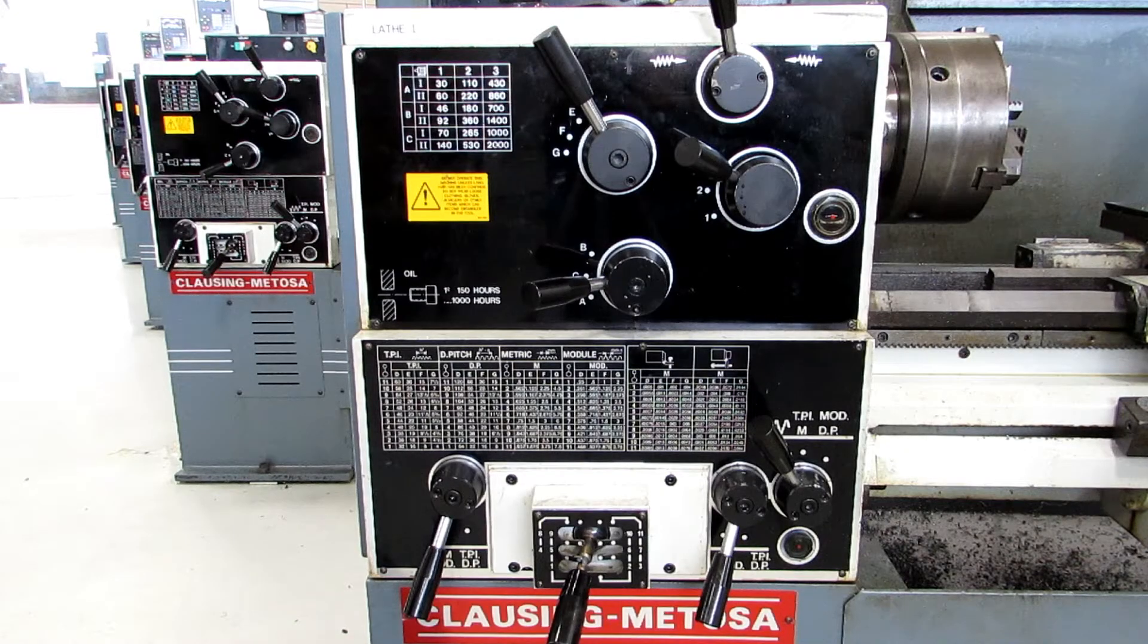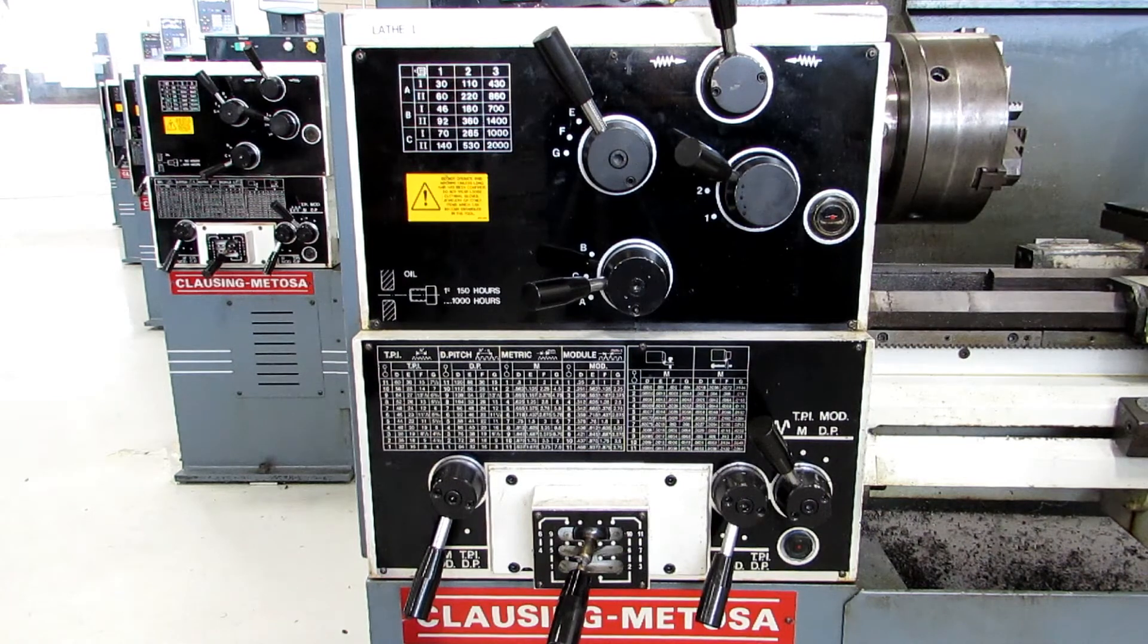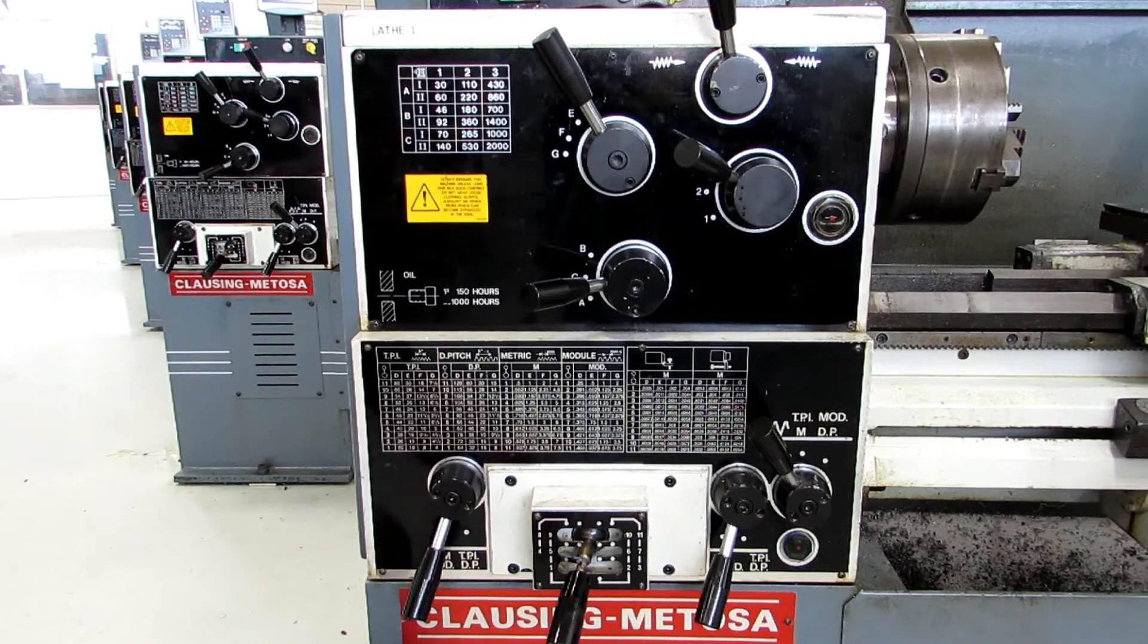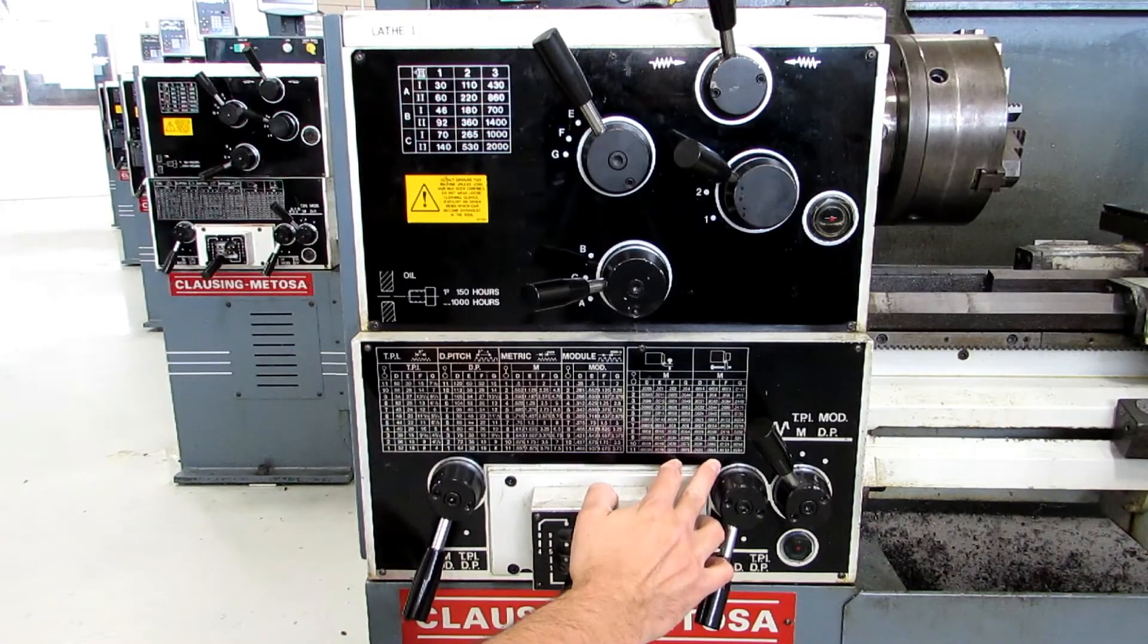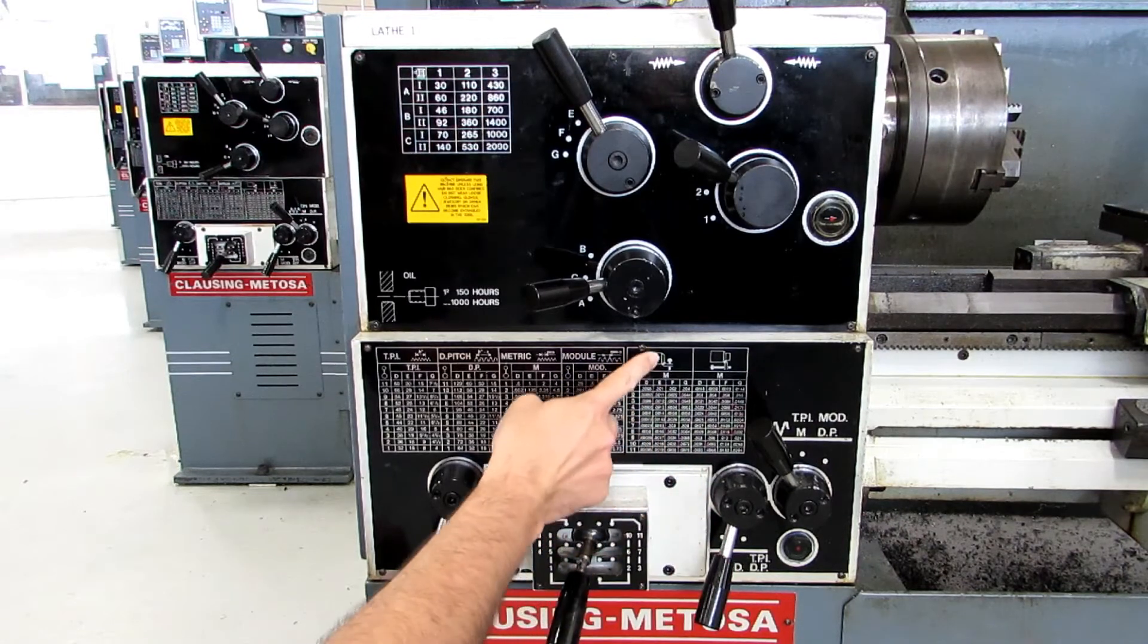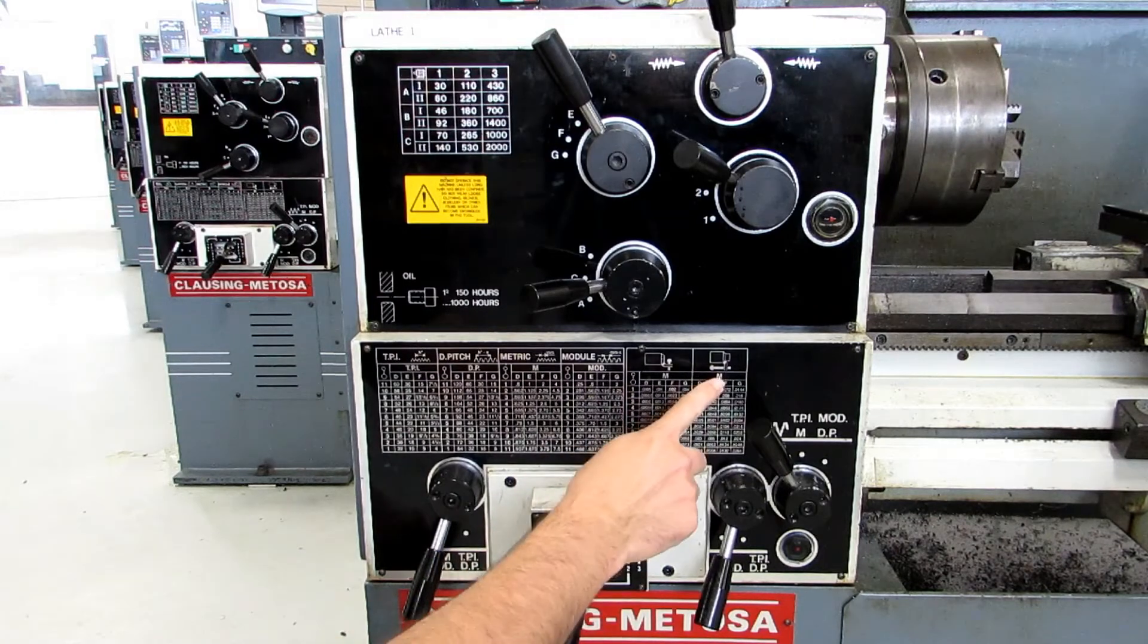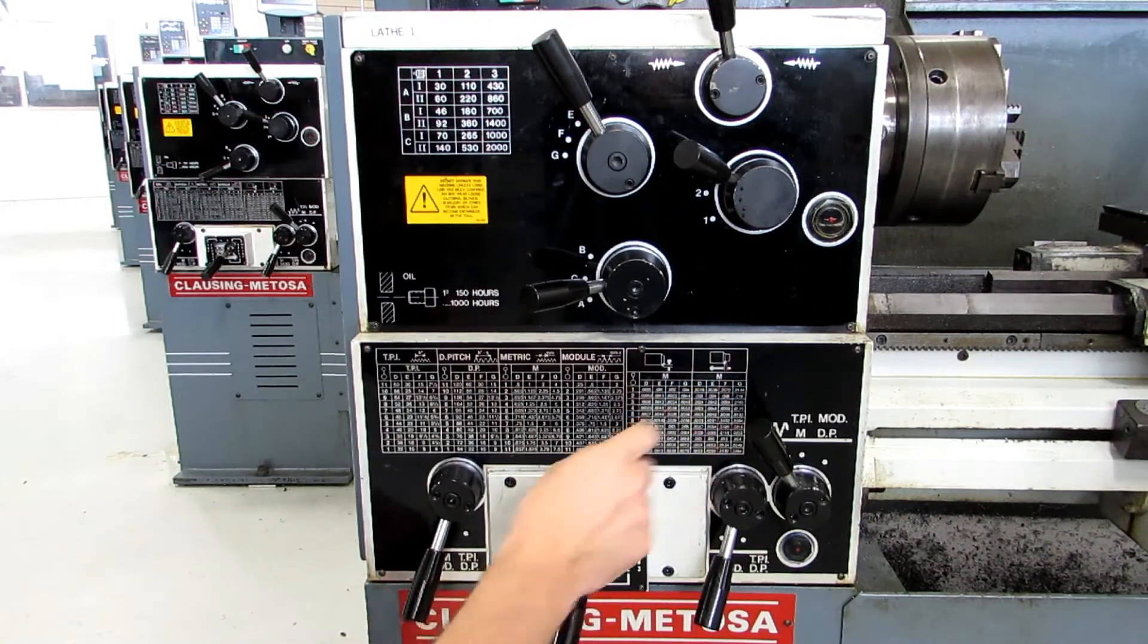The next thing we're going to talk about is how to change feeds and feed rates. Actually, all of these are feed charts, but the ones that are actually the feed rates for the machine are right over here. There's two charts. One is for the cross feed and you've got an arrow moving across the part on the chart. The other is for the longitudinal feed. You have an arrow moving along the part in the picture.